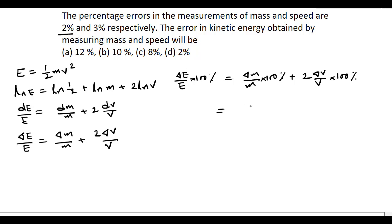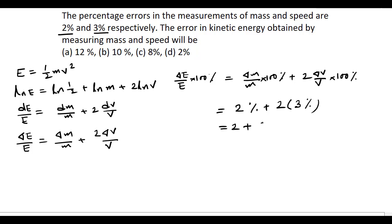The percentage error in the measurement of mass is 2 percent, i.e., (δm/m)×100% = 2%. The percentage error in speed is 3 percent, i.e., (δv/v)×100% = 3%. Therefore: 2% + 2×3% = 2% + 6% = 8%.